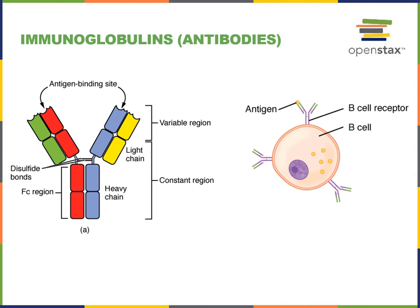The variable region is different for all of the antibodies produced during the initial process of B lymphocyte maturation, to make an enormous variety of different B lymphocytes that all have a distinct antigen binding site on their antibodies.